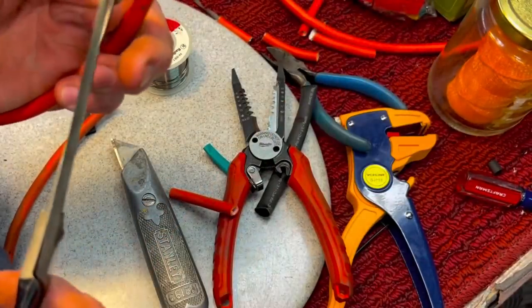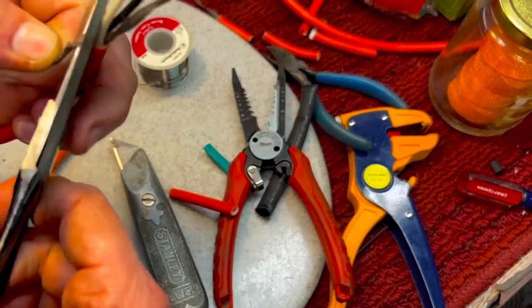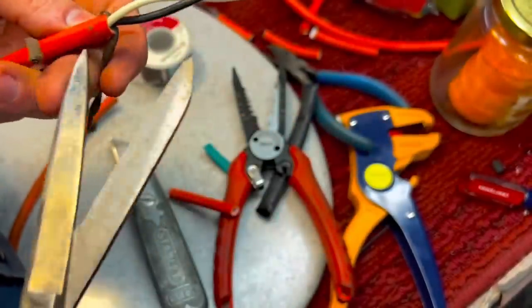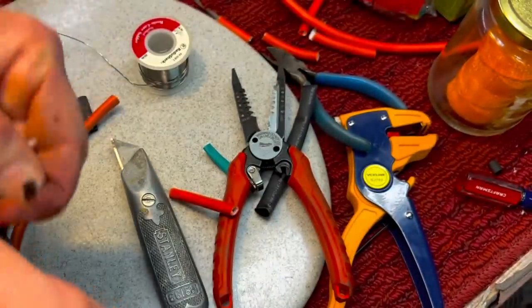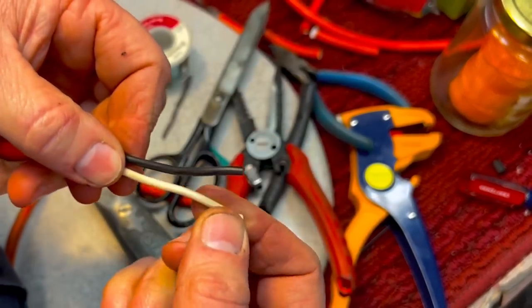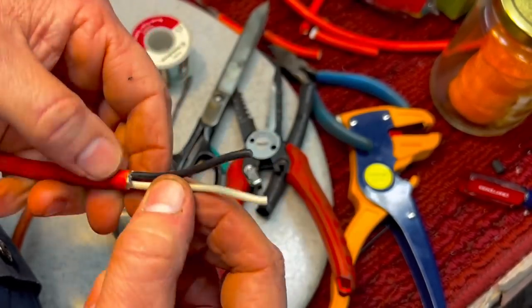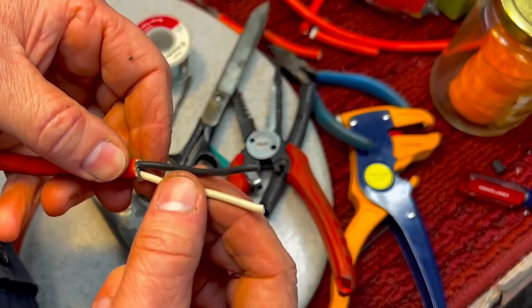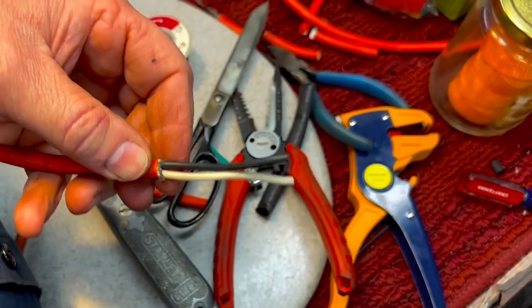Now we're going to cut this off here, this strain relief. And then what we're going to do is we're going to strip back these wires. Now what we're going to do is we're going to stagger the wires. We're going to cut the white short on one and the black short on the other side and strip them down.